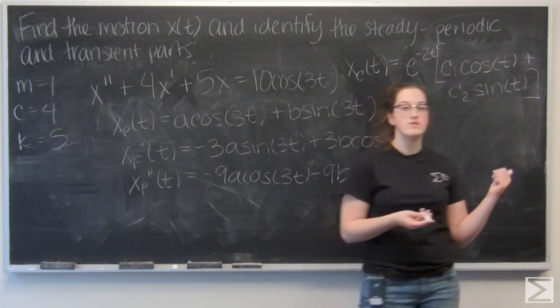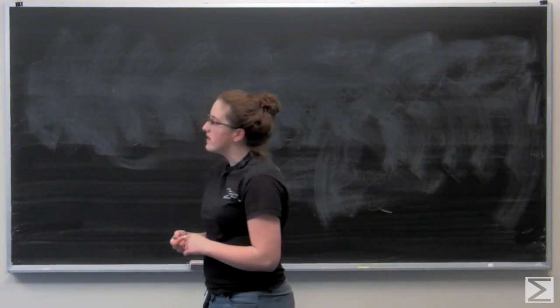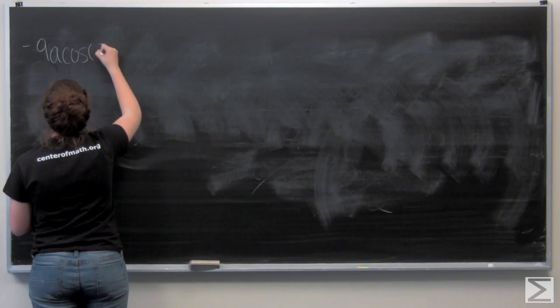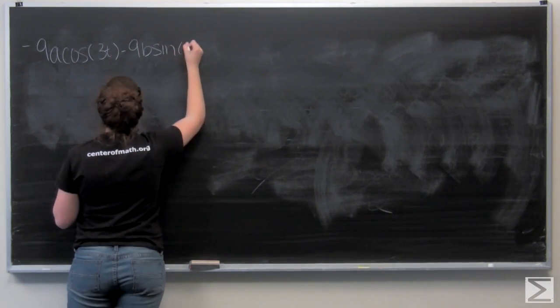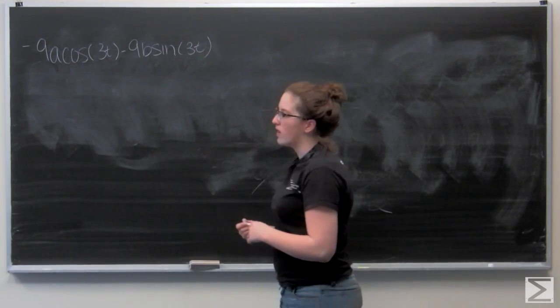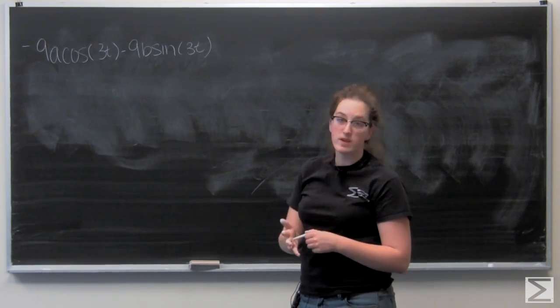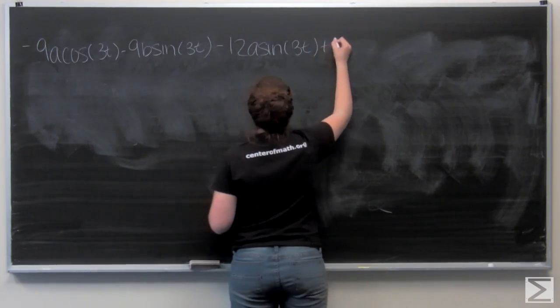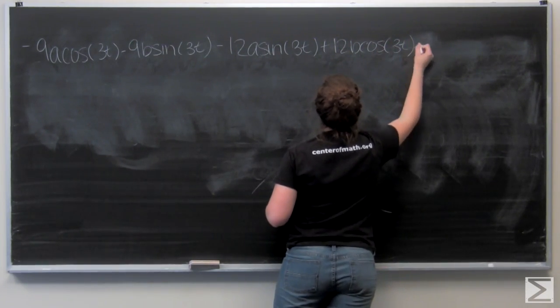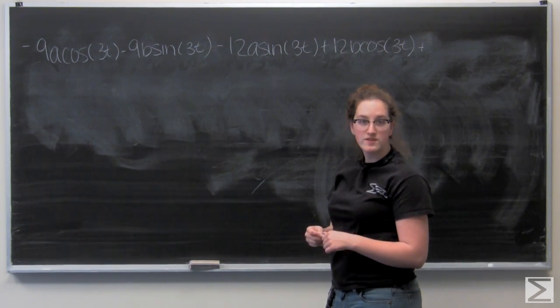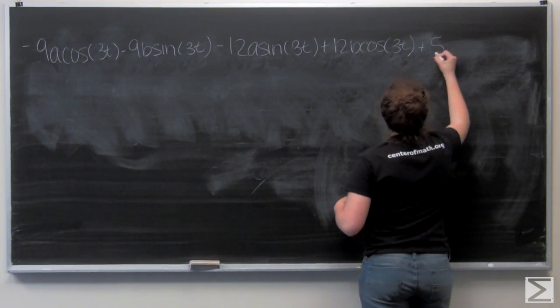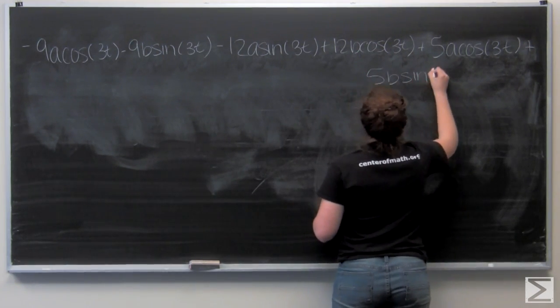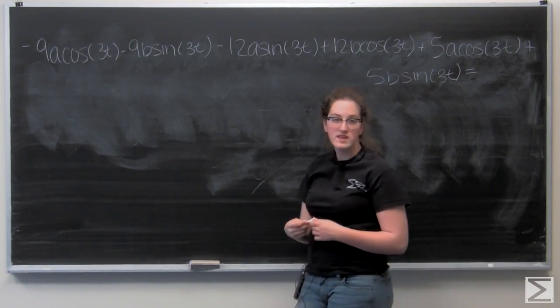And I'm going to move over here and plug that into the equation. So I have x double prime. So let's write that one out first. Plus 4x prime, so minus 12a sine of 3t plus 12b cosine of 3t. Plus 5x, so that's 5a cosine 3t plus 5b sine of 3t. And we know that that needs to equal 10 cosine of 3t.